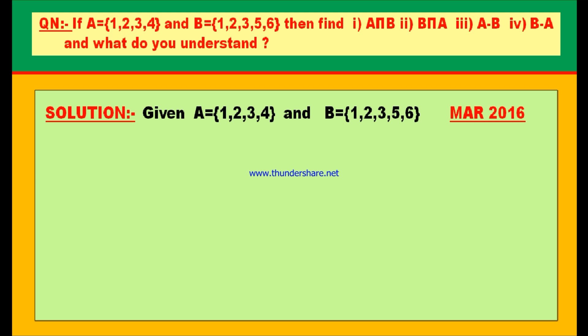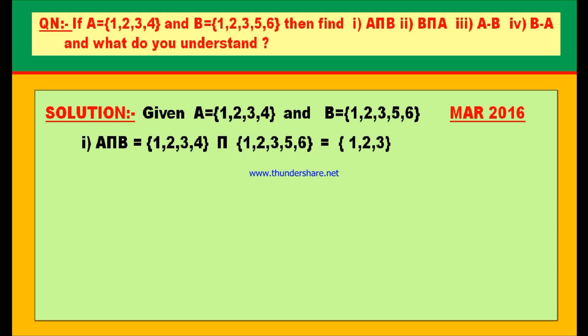A = {1, 2, 3, 4} and B = {1, 2, 3, 5, 6}. First bit: A intersection B. Intersection means list out the common elements. The elements common in both sets are 1, 2, and 3. Therefore, A intersection B = {1, 2, 3}.